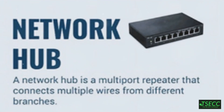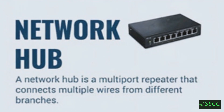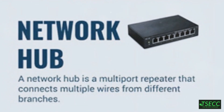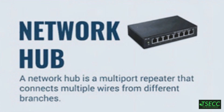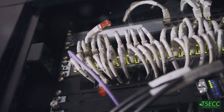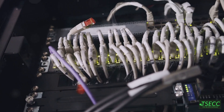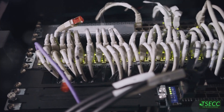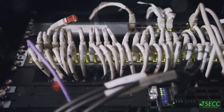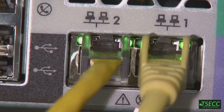Next in line, we have the network hub, the ultimate party host for your data packets. A network hub is a multi-port repeater that connects multiple wires from different branches, broadcasting data to every device connected. It's like a loudspeaker at a party, making sure everyone hears the message, but not the most efficient.